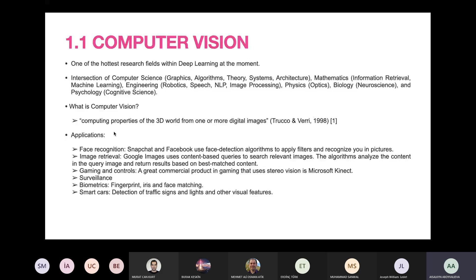There are countless applications of computer vision. We have face recognition — for instance, Snapchat and Facebook. We have image retrieval — Google Images deploys this application. We have gaming and controls; some of you may know Microsoft Kinect. There is surveillance, there is biometrics, there are smart cars, and many other applications.